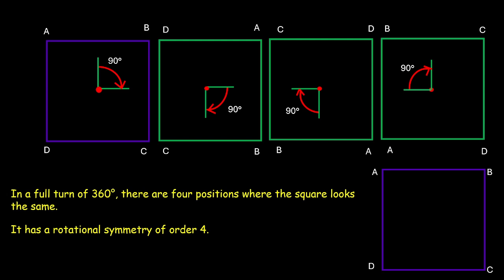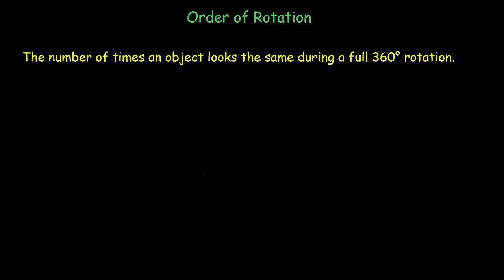What is rotational symmetry? Whenever we rotate an object at a certain angle of rotation and it looks the same as it was before rotation, we say that it is showing or depicting rotational symmetry. The order of rotation is the number of times an object looks the same during a full 360 degree rotation.